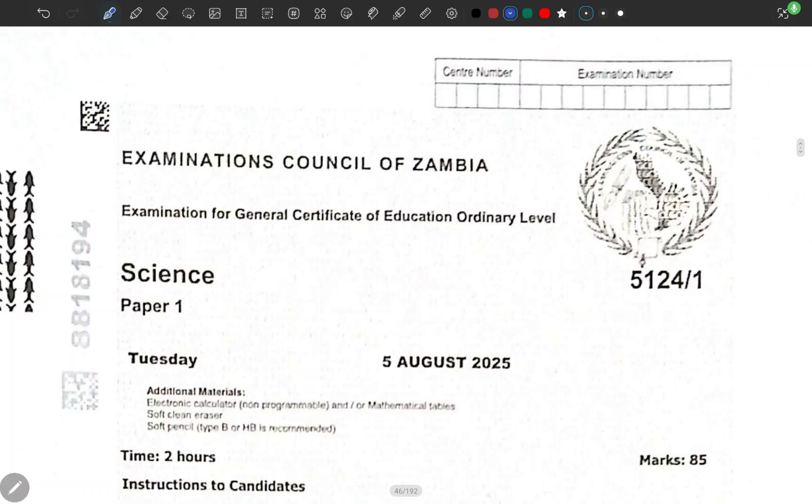Okay, so we are back with another Science Paper 1, which is physics division. Remember that we've been dealing with Section B, so let's see how many questions we can answer for today.